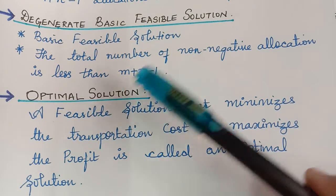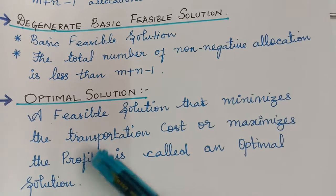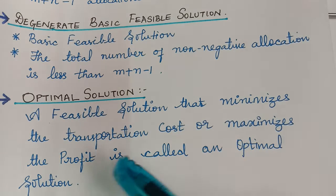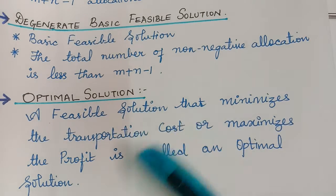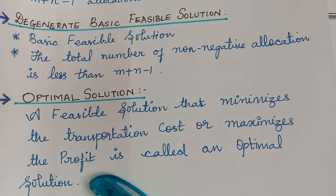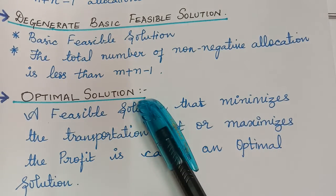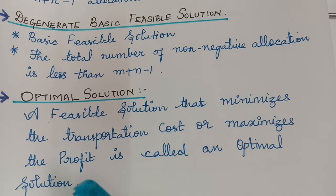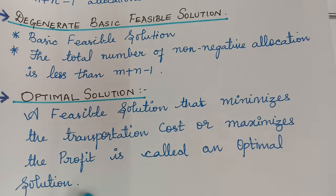An optimal solution is a feasible solution that minimizes the transportation cost or maximizes the profit. The main aim of the problem is to minimize the transportation cost or to maximize the profit, and when this is satisfied, such a solution is known as an optimal solution — a solution that optimizes the problem.